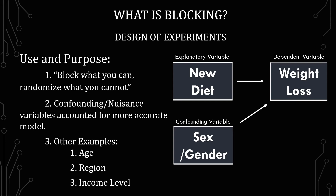Again, these are things that are not the focus of what you're analyzing — they're secondary. Just like with the diet example, the focus is: does the new diet work, yes or no? Sex and gender is there to complement the explanatory variable, not to explain it. It's there to help answer the question by reducing the noise, so you're not allowing variation to run rampant by not taking into account factors that actually influence what's being analyzed.